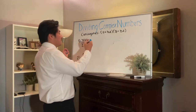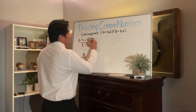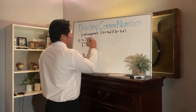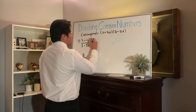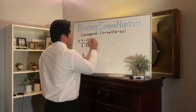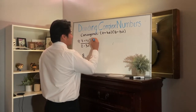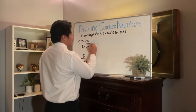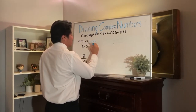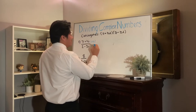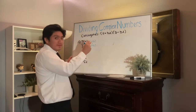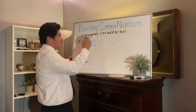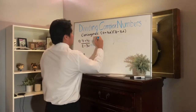We're going to multiply by two plus three i on both sides. From here we're going to distribute everything that we have available.